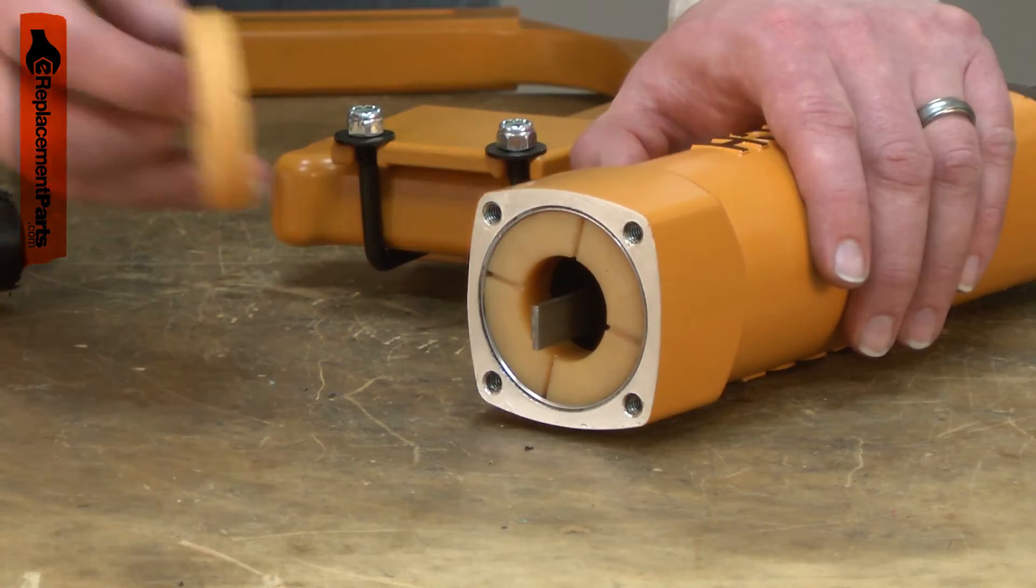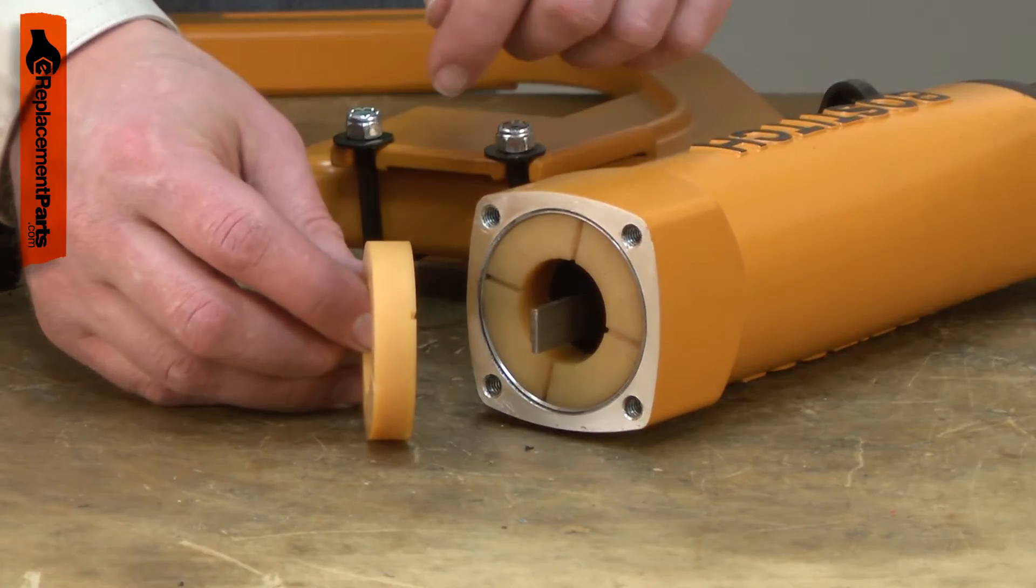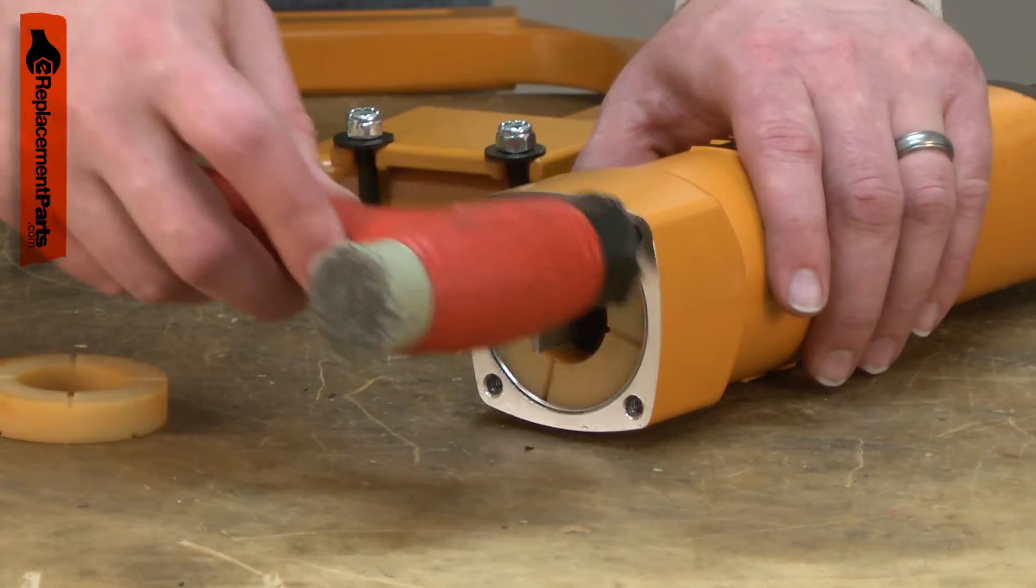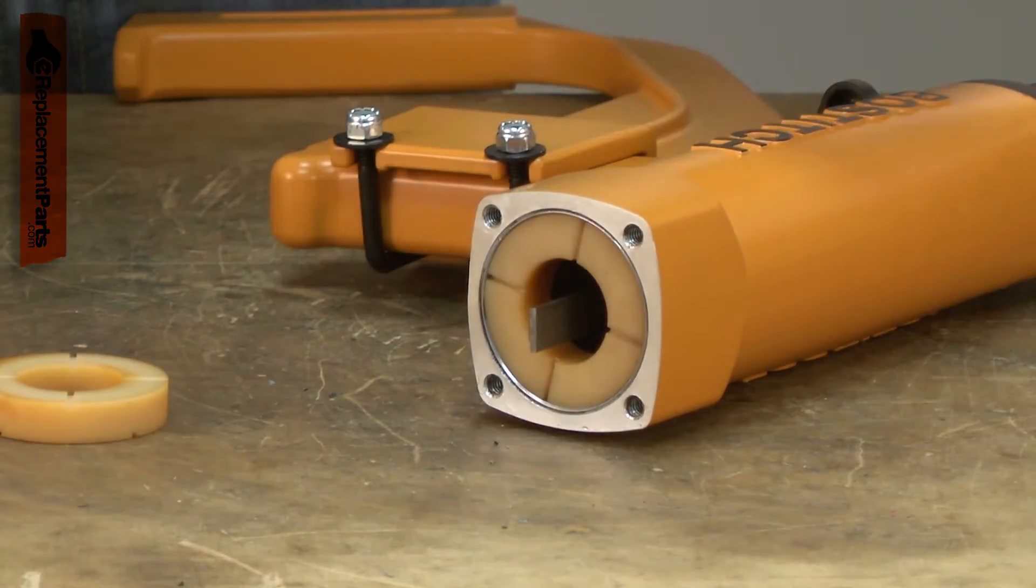If this were the older style gun and use the thinner bumper, the next step would be to place the spacer and tap that in until it's flush as well.